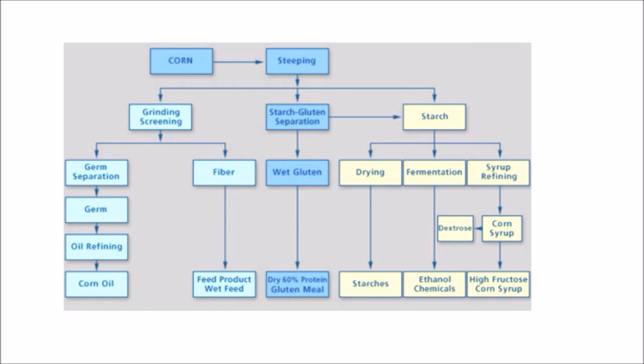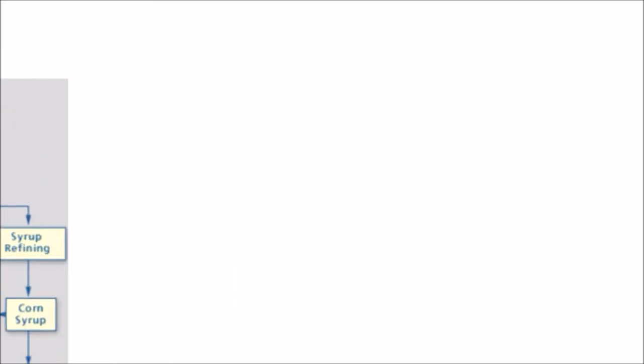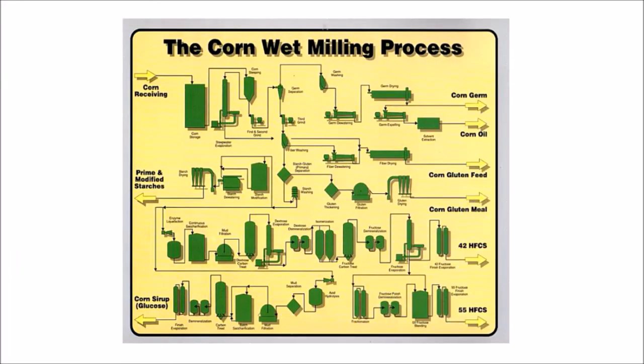Substantial Soak H2O is additionally sold without anyone else's input as a sustained fixing and is utilized as a part in ice ban, an ecologically well disposed contrasting option to salt for expelling ice from streets. The gluten part, protein, is separated and dried to deliver the corn gluten dinarco item. This item is very looked for after as an encourage fixing in poultry grill operations.